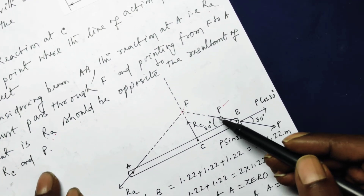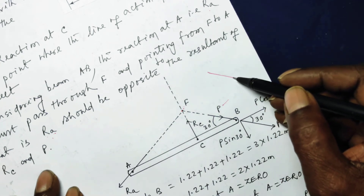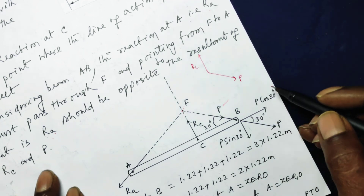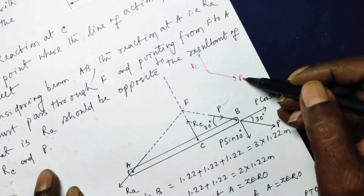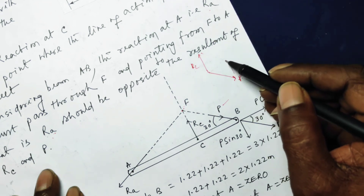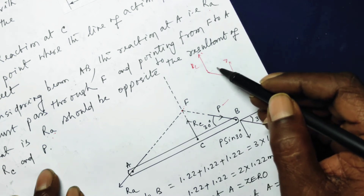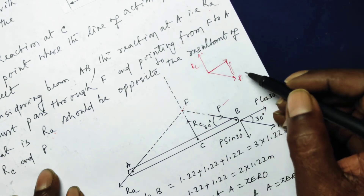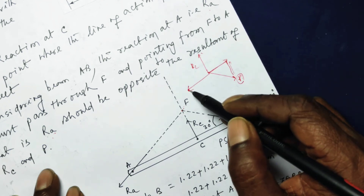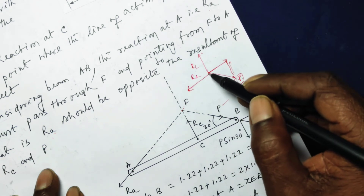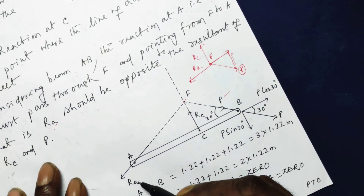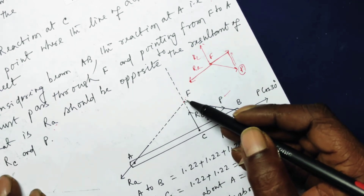The applied force P points in one direction and the reaction force RC points in another direction. The resultant of RC and P, constructed using the parallelogram law, points in a certain direction. Since the beam is in equilibrium, RA must balance this resultant by pointing in the opposite direction — that is, from F toward A. So, the reaction force RA at point A is directed along FA.